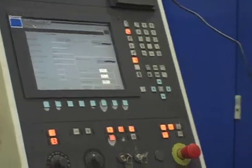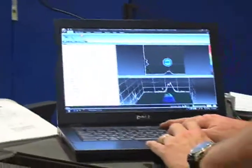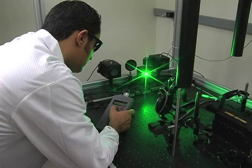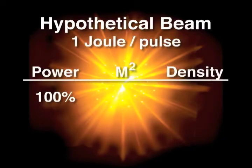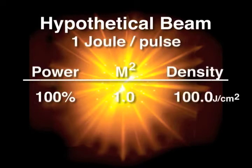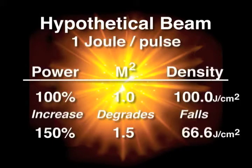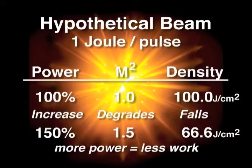Frequently, the anticipated results do not materialize. Often, this can be predicted if one knows the m squared value of the laser versus power output levels. To demonstrate this problem for a hypothetical beam of 1 joule per pulse, an m squared equals 1.0, with a focused average power density of 100 joules per centimeter squared. If we increase the power by 50%, but the m squared degrades to 1.5, power density falls to 66.6 joules per centimeter squared, a reduction of almost one-third. This reveals an all-too-common result, where more power input results in less work getting done.